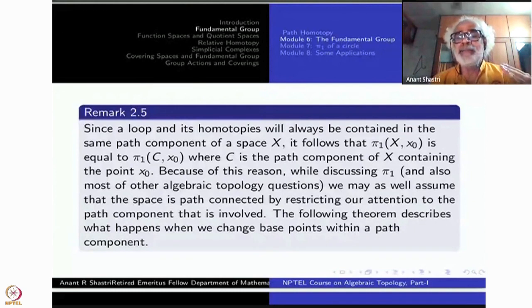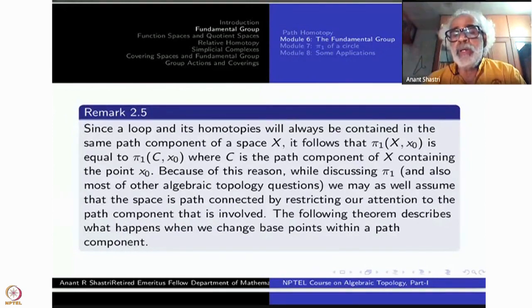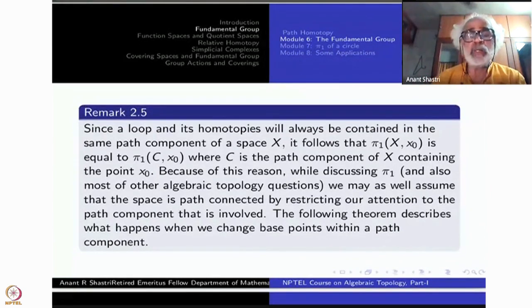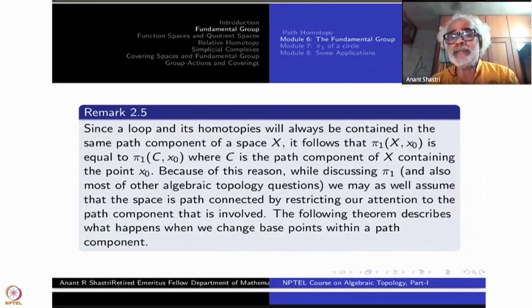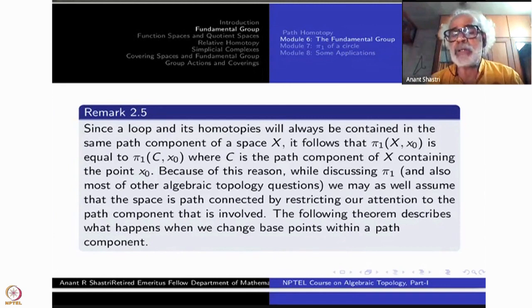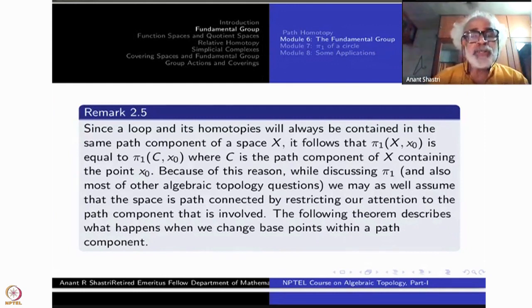A loop and its homotopy will always be contained in the same path component of X — you never leave the path component containing x₀. Therefore, the group π₁(X, x₀) is identical to π₁(C, x₀), where C is the path component containing x₀, under the ordinary inclusion of C inside X. Because of this, we could assume that X itself is path connected.